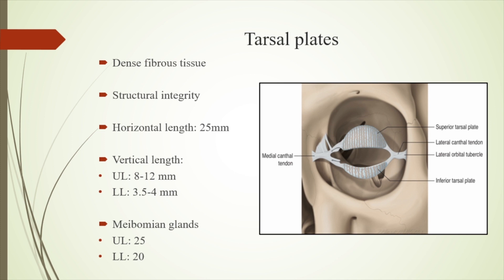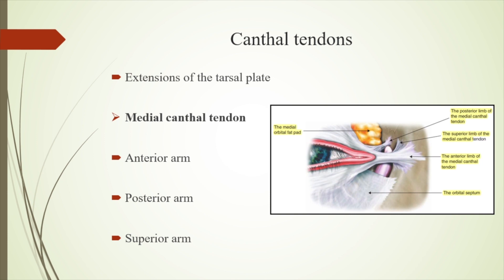Next, the tarsal plates — dense fibrous condensations that provide structural integrity to the lid and are important when planning reconstruction. Horizontally they measure around 25 mm; vertically, the upper tarsal plate measures 8 to 12 mm and the lower tarsal plate measures 3.5 to 4 mm. The tarsal plates carry meibomian glands: around 25 in the upper lid and 20 in the lower lid. An important point: whenever taking any tarsal conjunctival flap, always preserve at least 4 mm of tarsal plate for structural integrity.